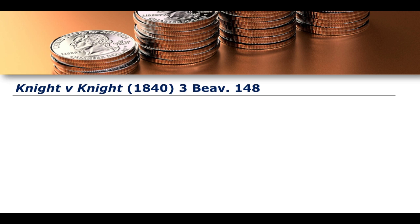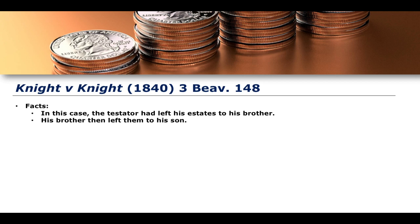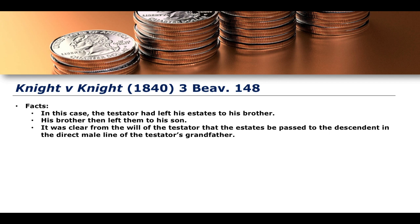One of the most landmark cases establishing these three certainties is Knight v Knight from 1840. In this case, the settlor had left his estates to his brother, who then left them to his son. The original testator — somebody who had died and placed the estates in the hands of his brother — specified in his will that the estates be passed to the descendants in the direct male line of the testator's grandfather.